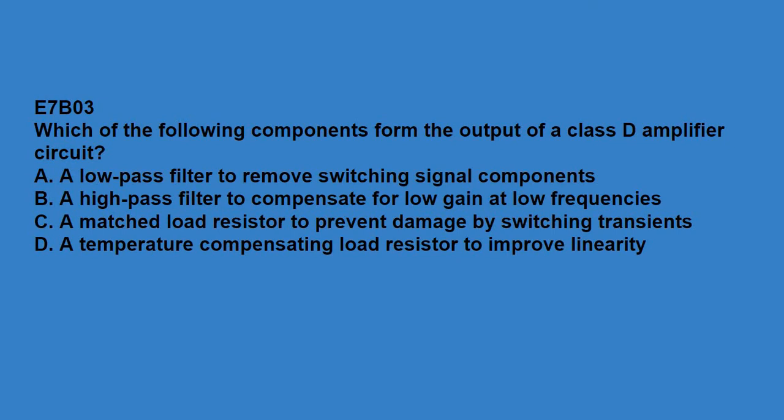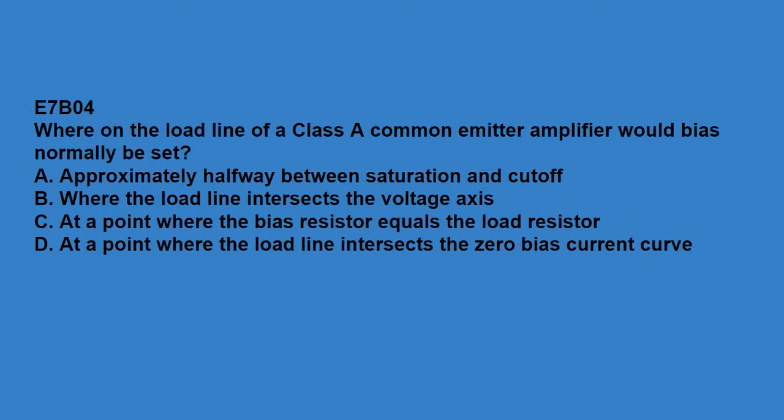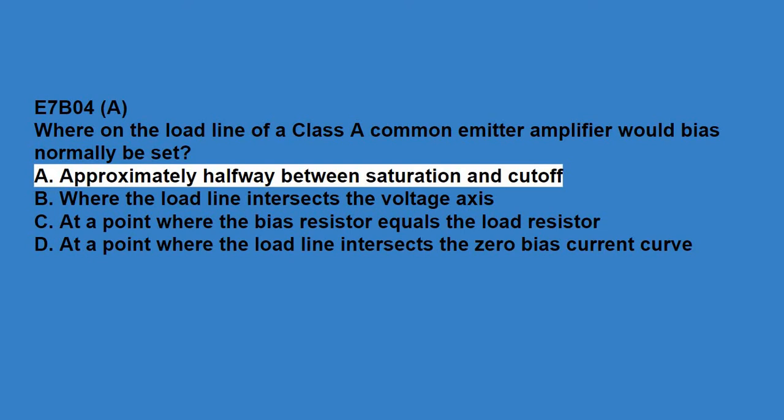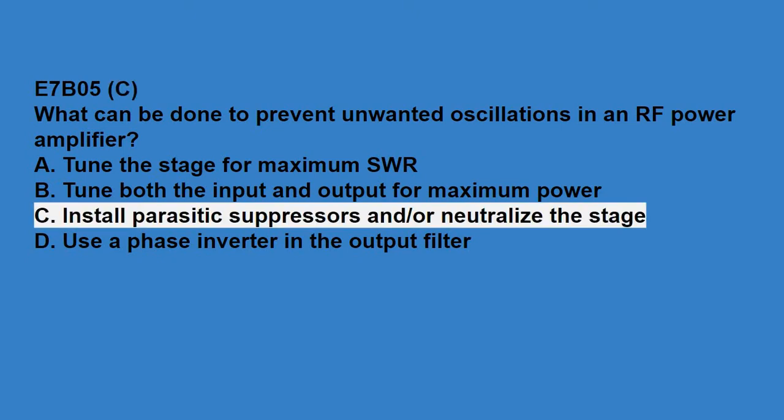E7B03, which of the components form the output of a class D amplifier circuit? A low-pass filter to remove switching signal components. E7B04, where on the load line of a class A common emitter amplifier would bias normally be set? Approximately halfway between saturation and cutoff. E7B05, what can be done to prevent unwanted oscillations in an RF power amplifier? Install parasitic suppressors and/or neutralize the stage.